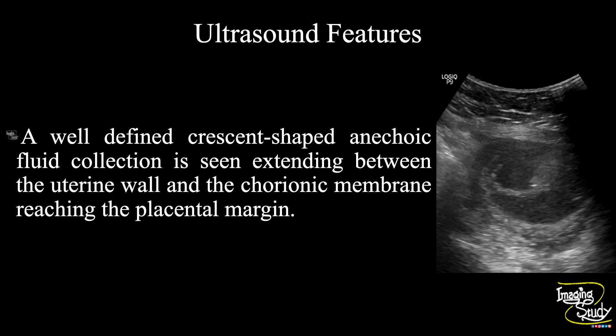So in summary, a well-defined crescent-shaped anechoic fluid collection is seen extending between the uterine wall and the chorionic membrane, reaching the placental margin, indicating this as a case of subchorionic hemorrhage.